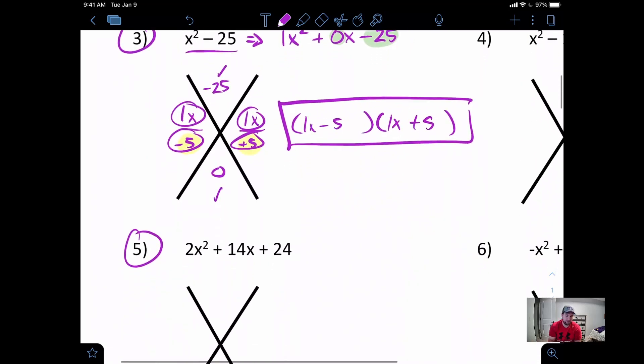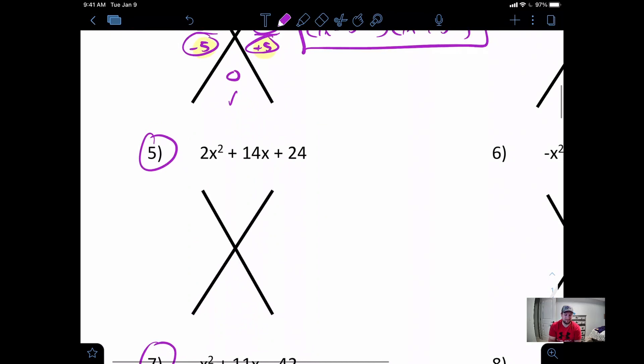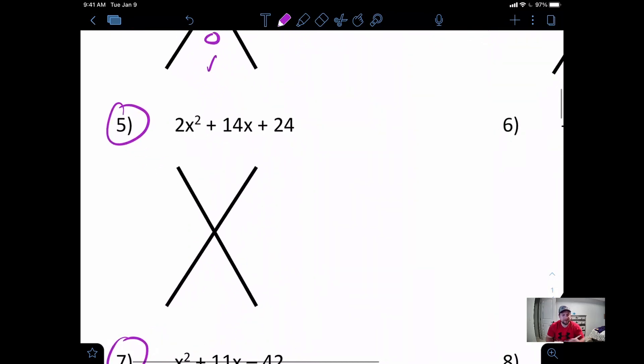Let's go on to problem number 5. Now when we look at this one, first thing you should notice is this 2. If there's a 2 there, we should try to factor out that 2 out of all of those terms. So when I do that, I'm just dividing it. So if I pull the 2 out of everything, that would disappear. I would be left with just x squared. If I pull the 2 out of 14, 14 divided by 2 would leave us with just 7x's there. And if I pull the 2 out of 24, 24 divided by 2 is 12.